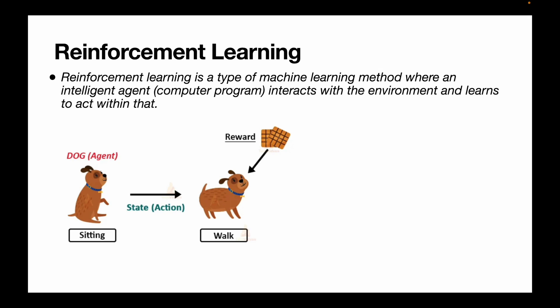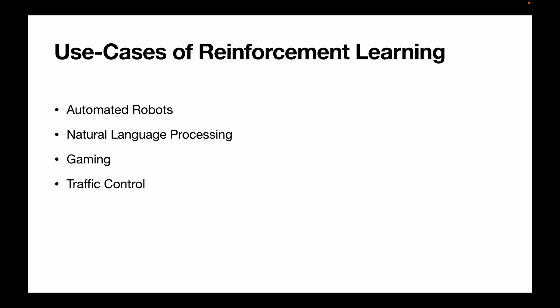Reinforcement learning is a type of machine learning where an intelligent agent — a computer program or algorithm — interacts with an environment and learns to act within it. Think of training a dog: if the dog does what you want, you give it a treat, and the dog learns that sitting down earns a reward. This reward-based method is called reinforcement learning.